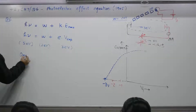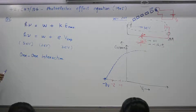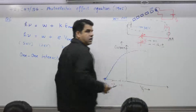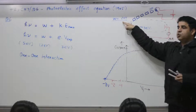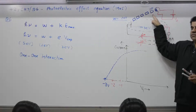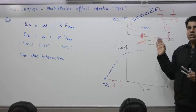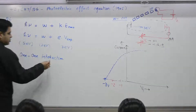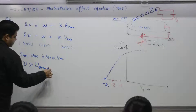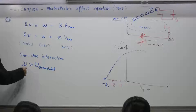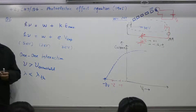It is 1-to-1 interaction. A 1.5 electron volt packet cannot eject the electron — the minimum amount of energy required is the work function, which is 2 eV. If you use a packet of 1.5 eV, this packet does not have sufficient energy to eject the electron from the surface. That is why you need frequency greater than the threshold frequency, meaning frequency should exceed a certain value and wavelength should be less than a certain value. Then and only then will the photoelectric effect take place.